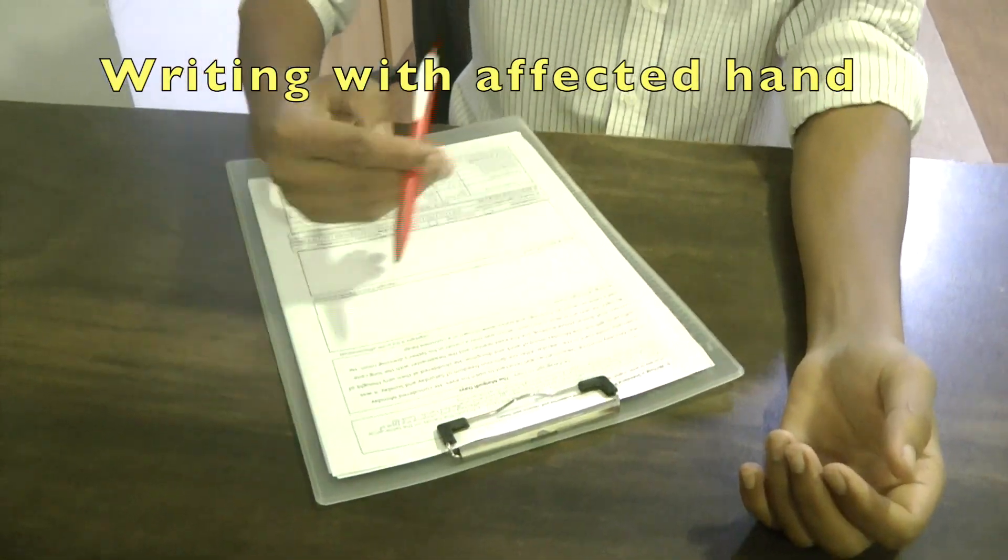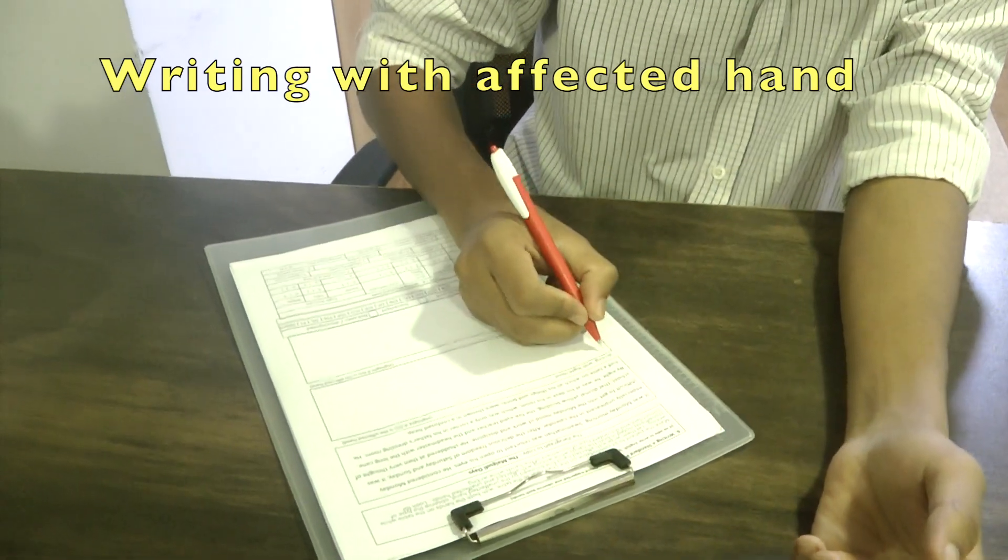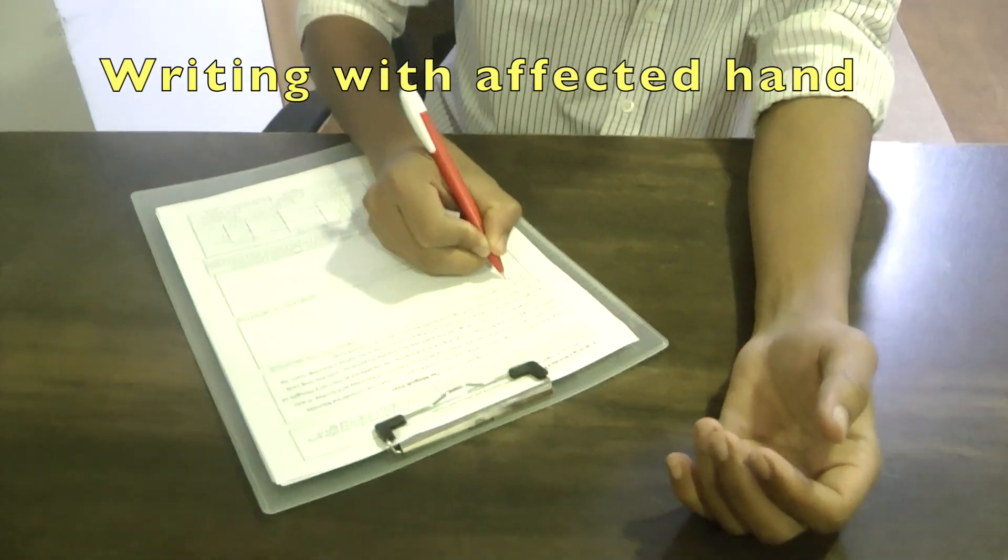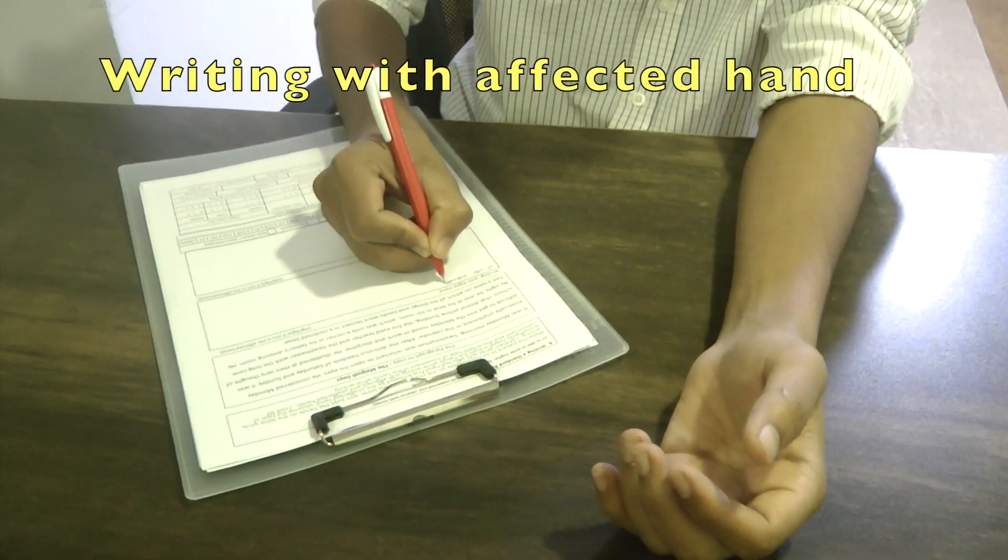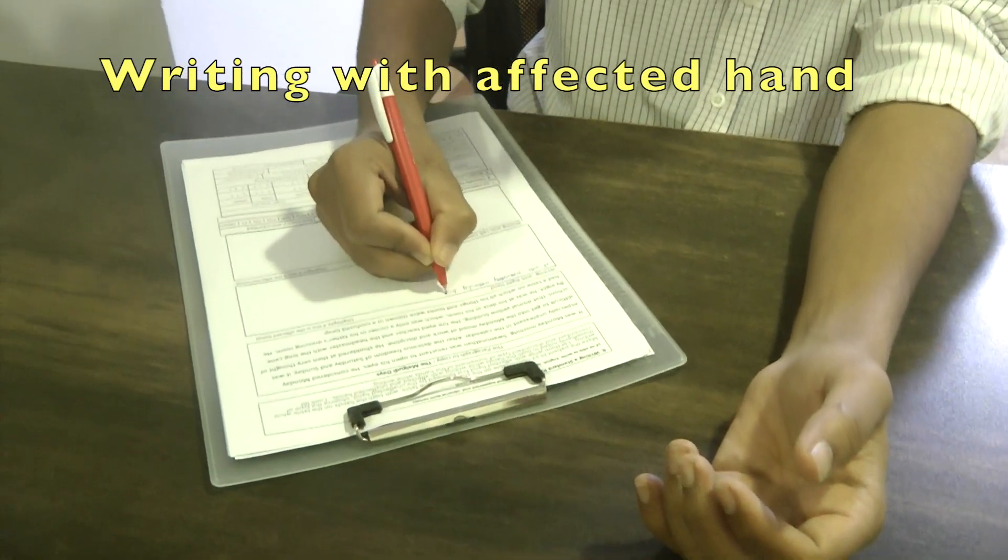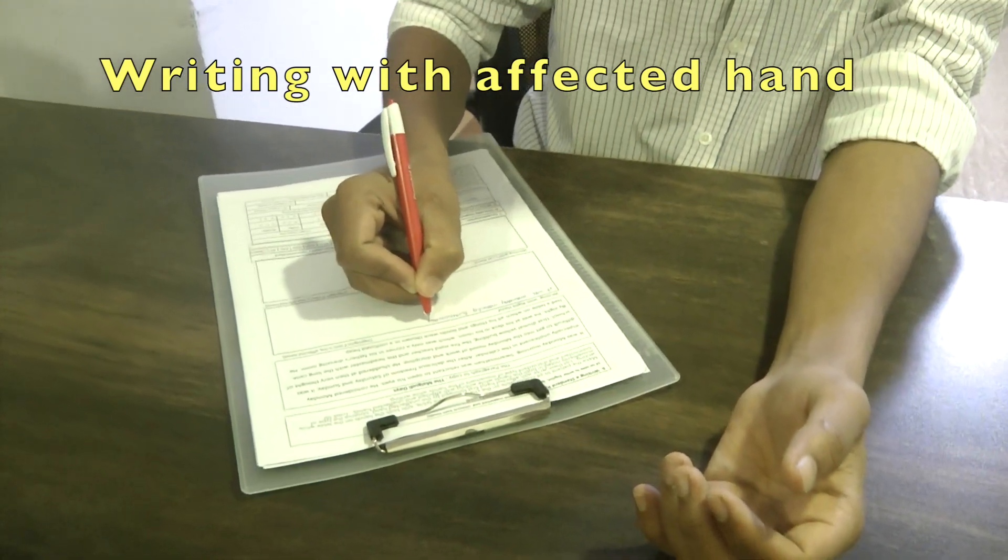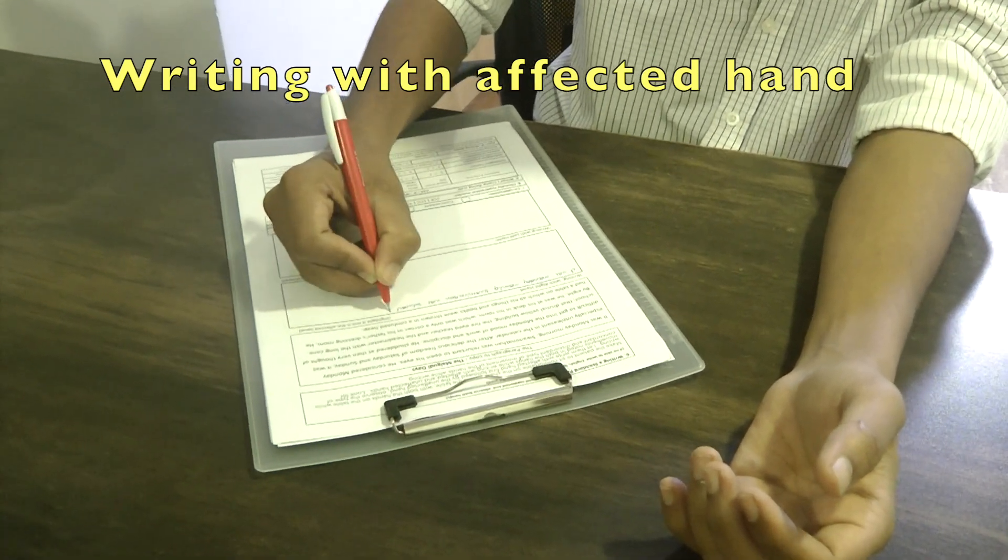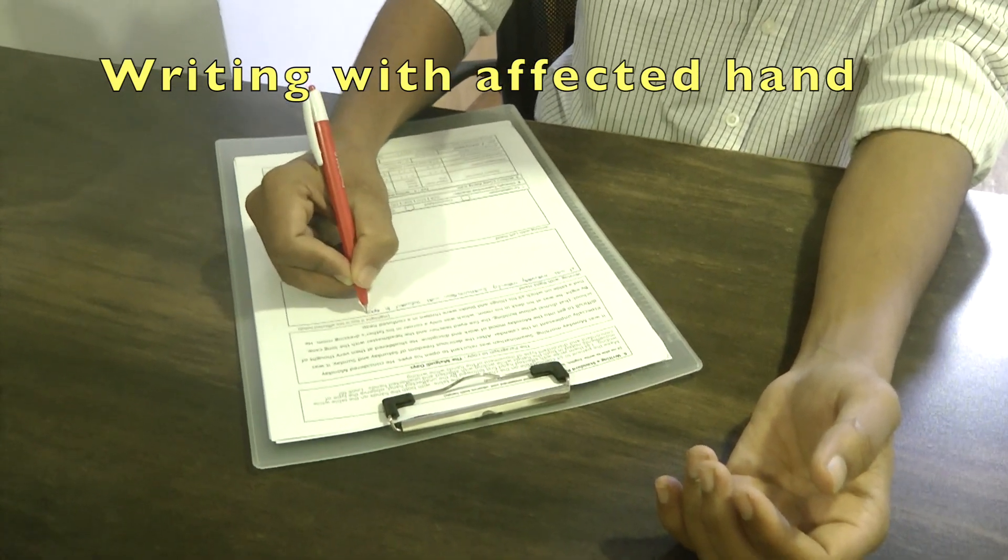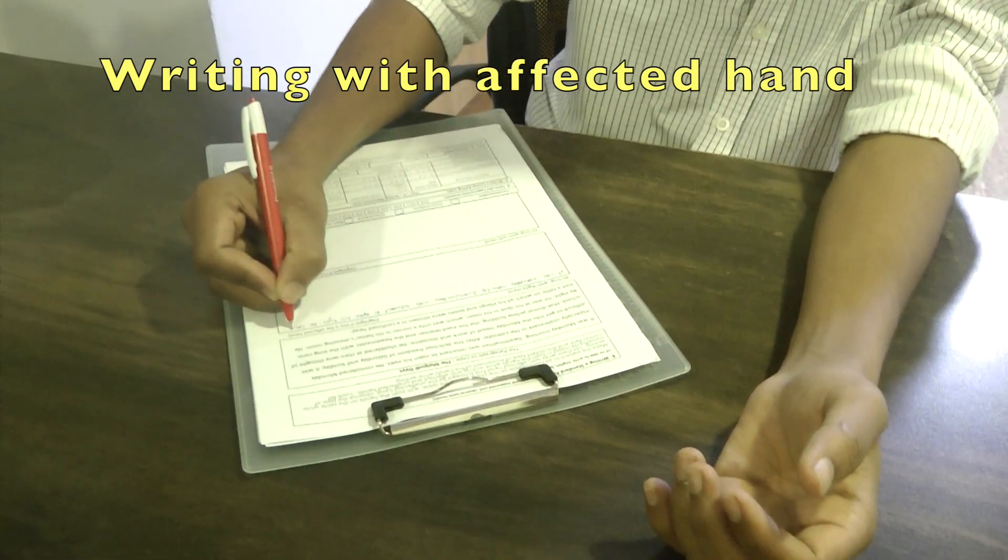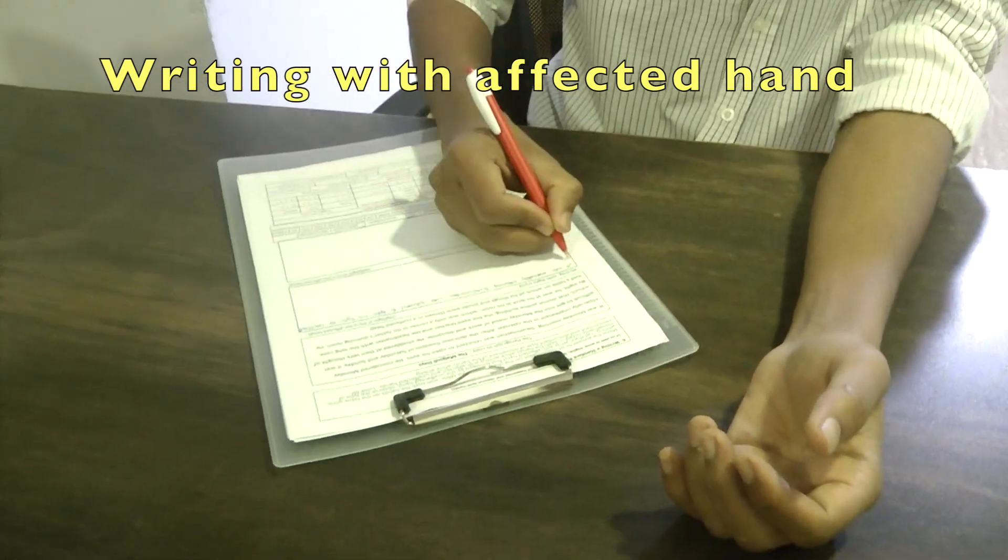The next important step in the assessment of writer's cramp is to assess the patient in his primary writing position. Make sure the subject is sitting comfortably and you can observe both hands while writing. Use a standard paragraph in the language known by the person. During this posture, observe the hand grip, movements of the thumb, fingers, wrist and forearm while writing. Make note of possible abnormal contractions or compensatory movements.